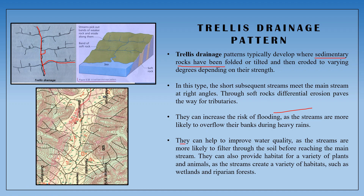The Trellis Drainage Pattern can help improve water quality, as the streams are more likely to filter through soil before reaching the mainstream. However, it also increases the risk of flooding, as the stream is more likely to overflow during heavy rain.